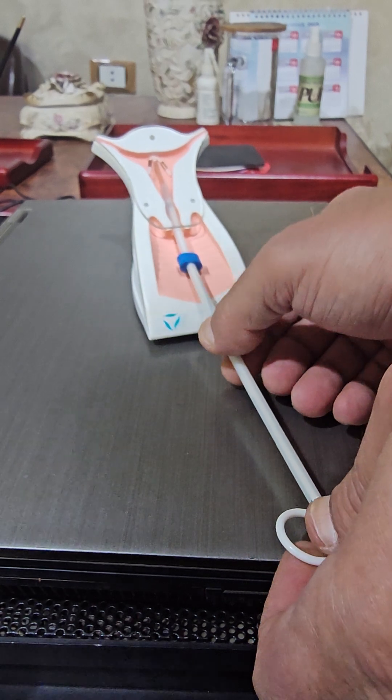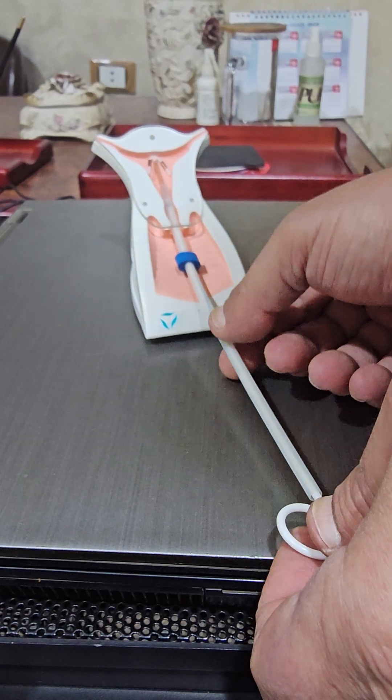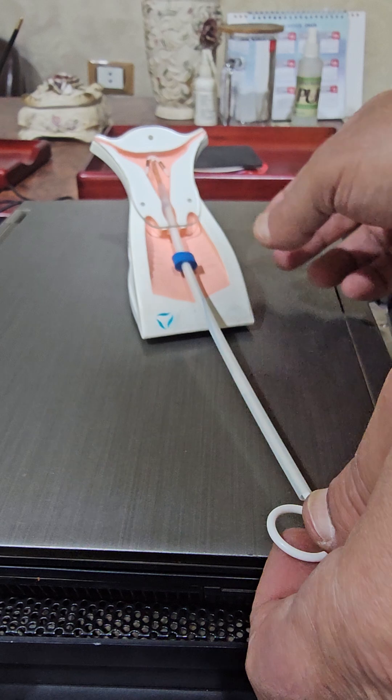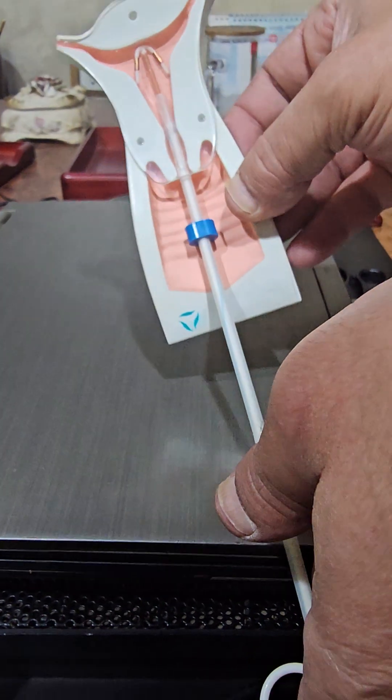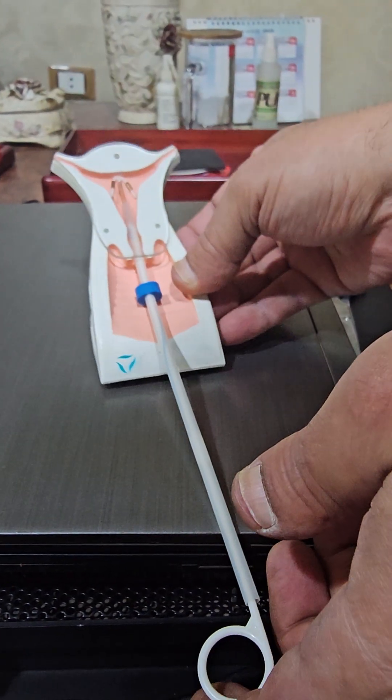What happened? The inserter withdrawal leads to the transverse arms released inside the cavity.